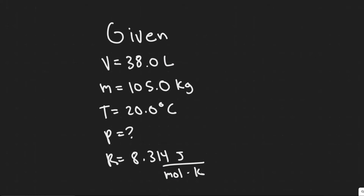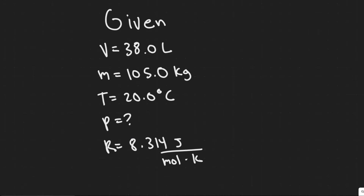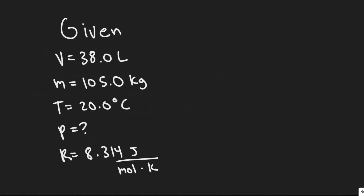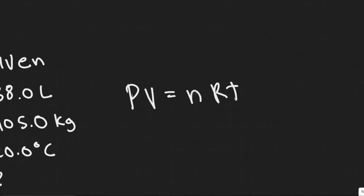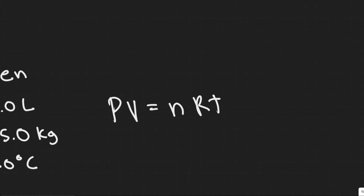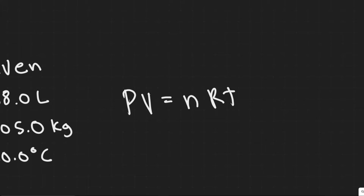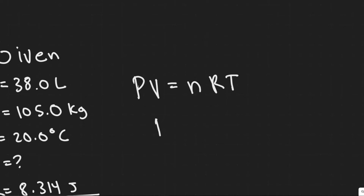To solve this, we're also going to need to know the gas constant, which is equal to 8.314 joules per mole times kelvin. We're going to use the ideal gas law, which tells us PV equals nRT, where P is the pressure, V is the volume, n is the number of moles, R is the gas constant, and T is the temperature. Since we're solving for pressure, we divide both sides by V and get P equals nRT over V.